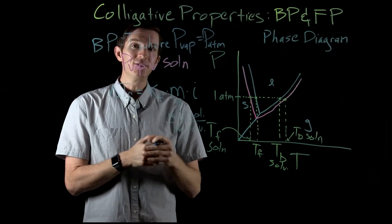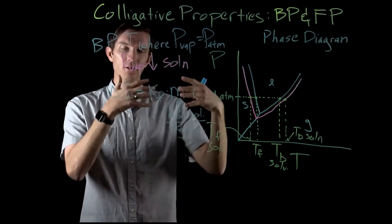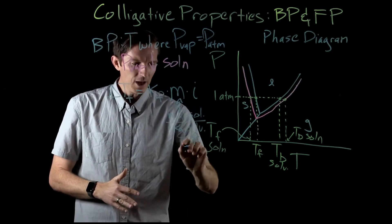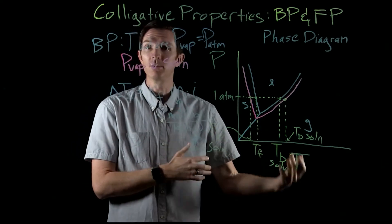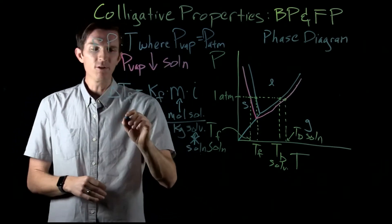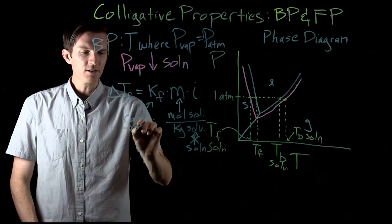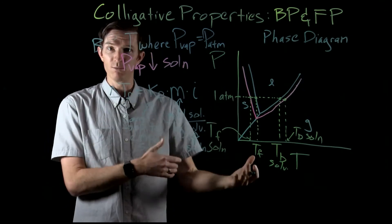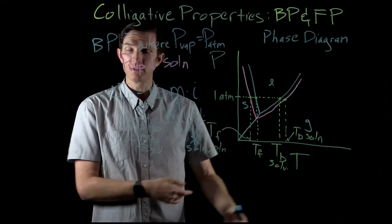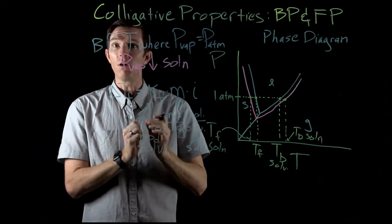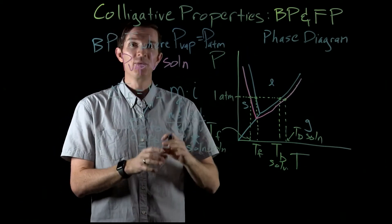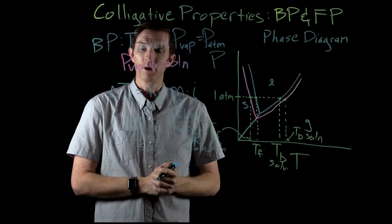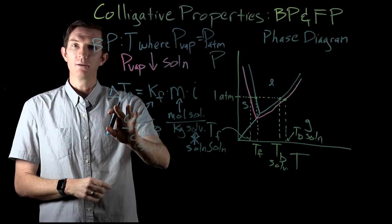Molality is moles of solute per kilogram of solvent. This concentration measurement is different from others we typically use — it's the ratio of solute to solvent, not to the total solution. So this is the mass of solvent, not the mass of the solution. K_f is the freezing point depression constant, which is specific to each solvent — water has its own K_f, methanol has its own — because colligative properties deal with changes to the solvent's properties.